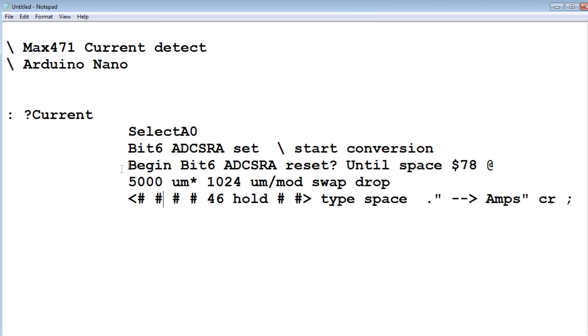Then it goes into a begin until loop and it will wait for the conversion to be completed. It'll wait for bit 6 to become reset. When it's reset, that means the conversion is over. Then it will read location 0x78, that's where the value will be.